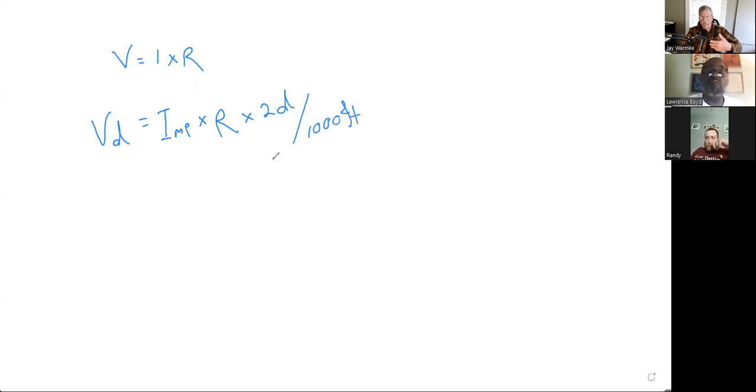Why twice the distance? Because it's a circuit - there and back. When we get the resistance of a wire from the NEC table, it's given in Ohms per 1000 feet, so we need to know how many thousands of feet.